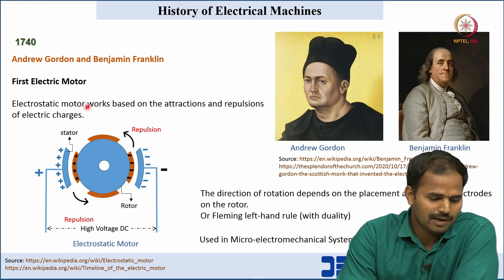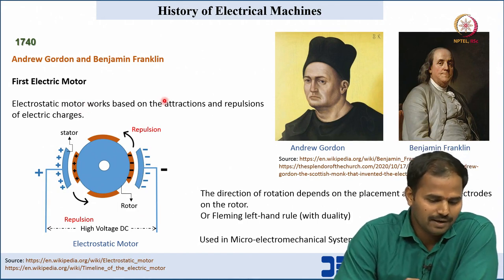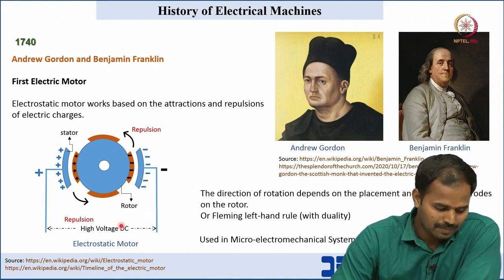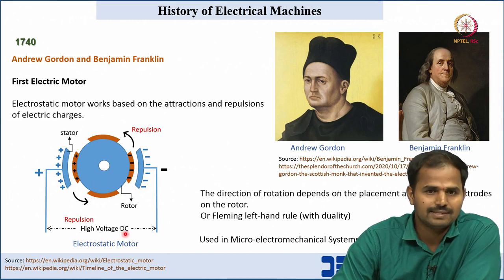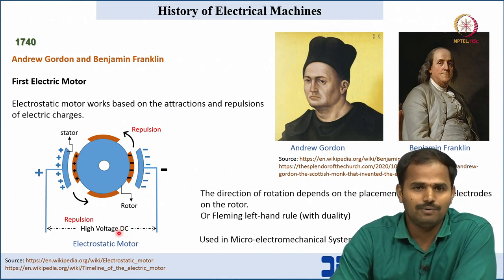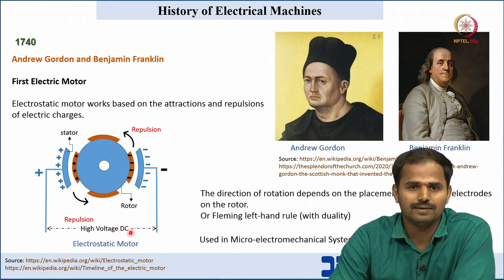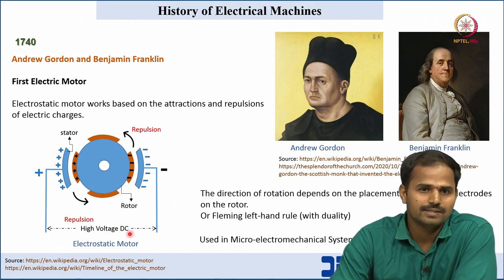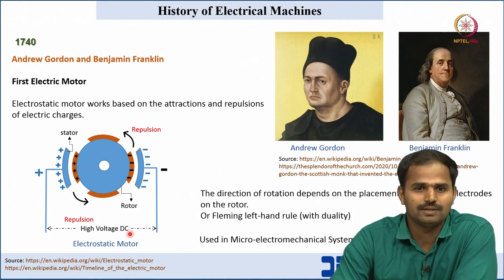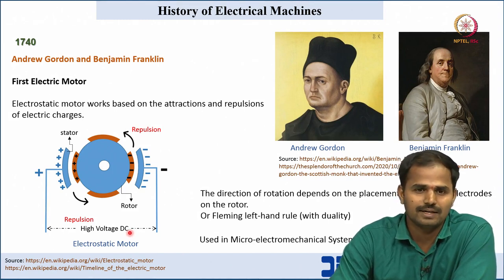Andrew Gordon and Benjamin Franklin did the experiment with high voltage DC as input. This high voltage DC was generated with Van de Graaff generators. At present we can generate it with simple power converters like rectifiers and DC-DC converters.